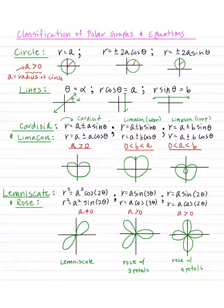For circle, equations are given by r equals a, r equals plus or minus 2a sine or cosine of θ. You can easily verify that these three equations are circles by converting each equation into rectangular form.